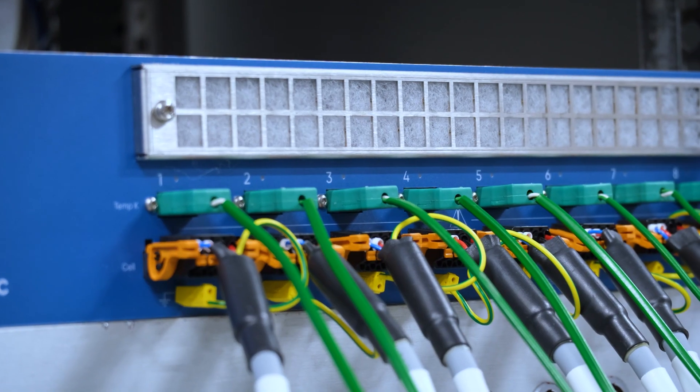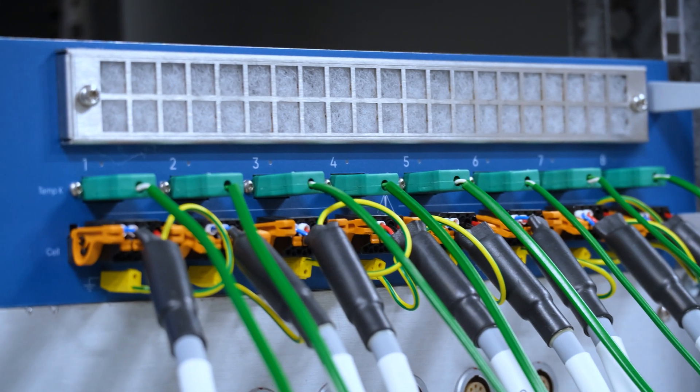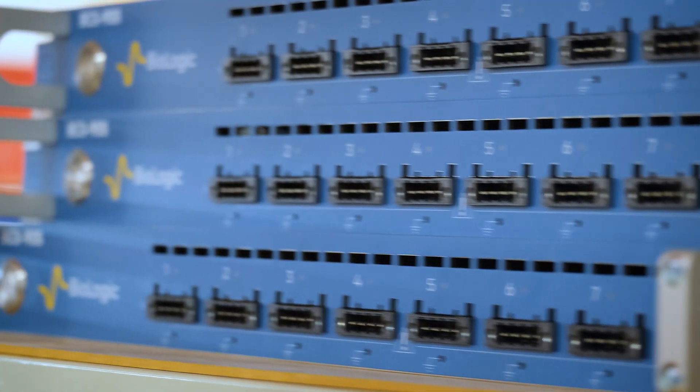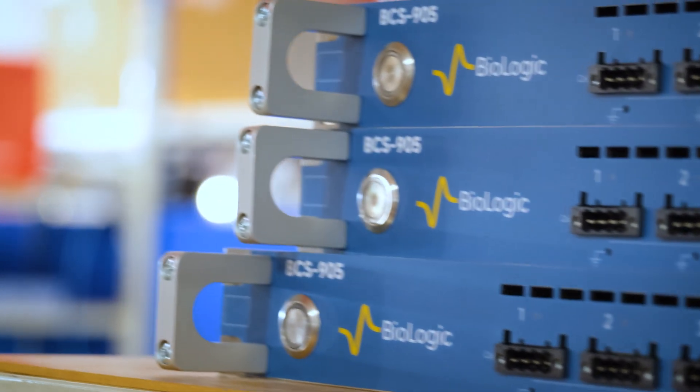BioLogic's BCS 900 series battery cyclers fit all the requirements needed for accurate, reliable, and versatile battery testing with a modular design, range of capabilities including native EIS, and easy-to-use software. The BCS 900 series is there to help researchers create the next generation in batteries. If you'd like to learn more about the BCS 900 series, visit BioLogic.net. Thank you for watching.